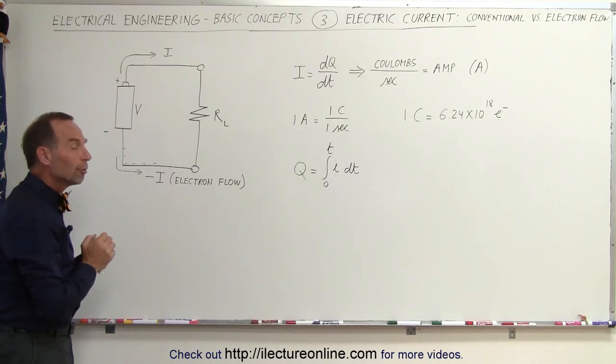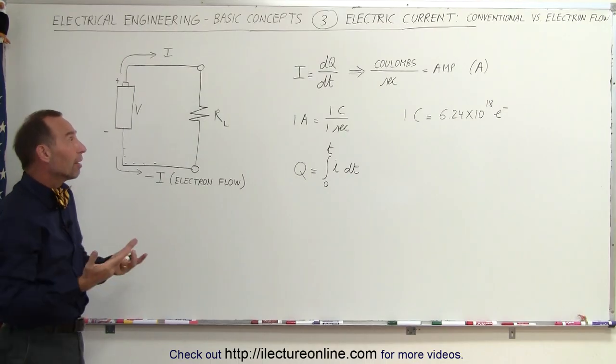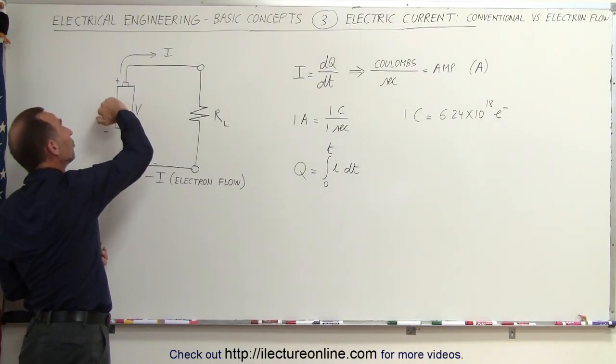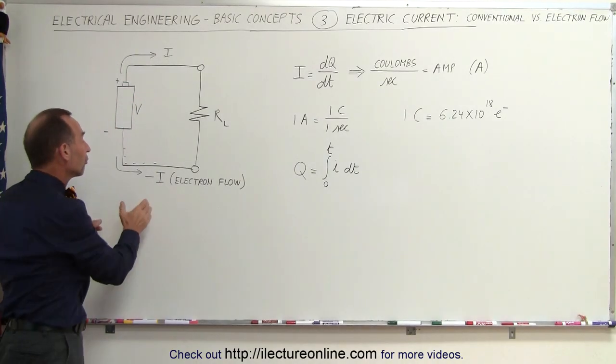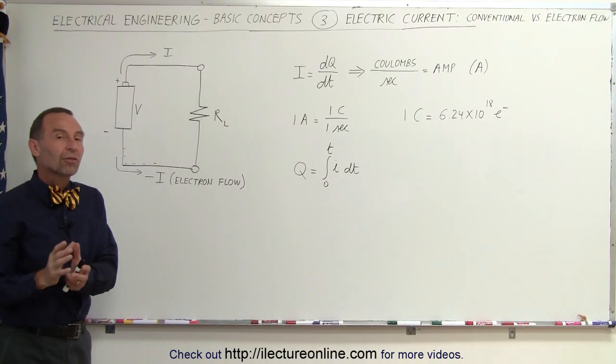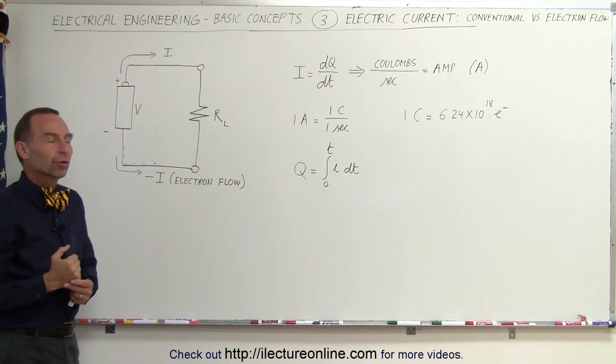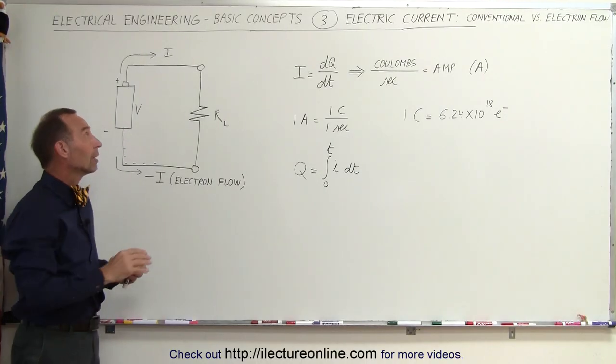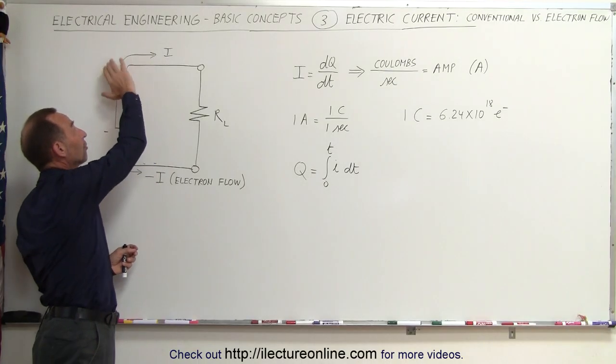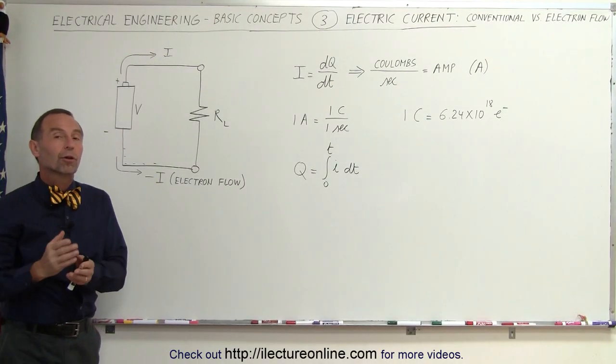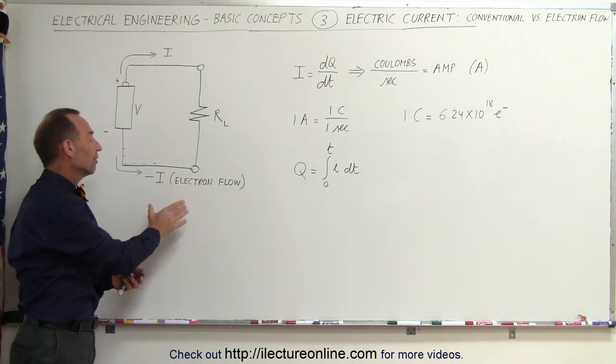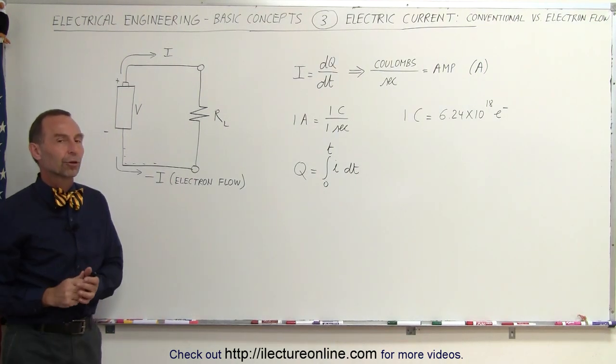What we're going to do from now on is we're going to assume that the positive current, the conventional current, is flowing indeed from the positive to negative side while we understand that the electrons are flowing in the opposite direction and the electrons then form the negative current. That way, we're always safe. We can say the conventional current flows from positive to negative and the electron current flows from negative to positive and we call that, therefore, the negative current.